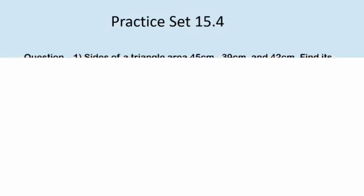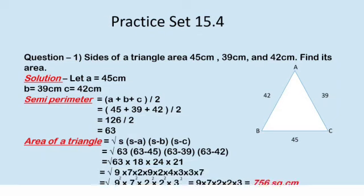Now with the help of Heron's formula, let's solve practice set 15.4, the first sum. Sides of a triangle are 45 cm, 39 cm and 42 cm. Find its area. Now here, let A be 45 cm, B be 39 cm and C be 42 cm.